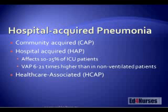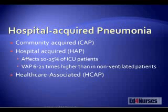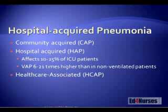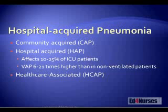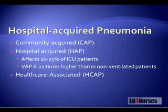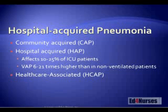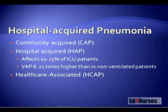Hospital-acquired pneumonia is a term we use for pneumonia that people get when they're in the hospital. Community-acquired pneumonia is pneumonia acquired out in the community. The typical definition used to differentiate these two is: if the patient suffers symptoms of pneumonia 48 hours after admission to the hospital, then it is probably hospital-acquired; earlier symptoms indicate community-acquired.